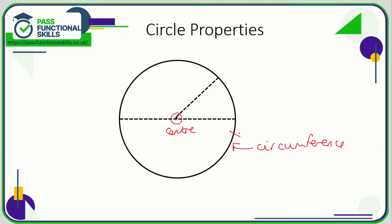The distance all the way around the circle is called the circumference. If you draw a line from the center to any point on the circumference, you have created a radius. A straight line from one side of the circumference to the other that passes through the center is a diameter. This point to the center is a radius, and from the center to here is another radius.